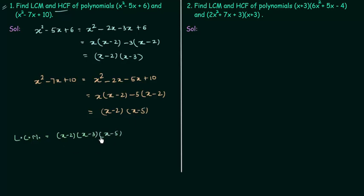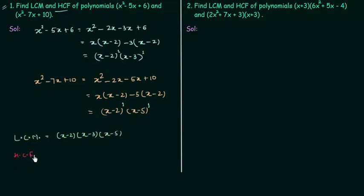We have to multiply these factors. The highest index for (x - 2) is 1 in both polynomials, so we take (x - 2). There is only one (x - 3) with index 1, so we include (x - 3). Similarly, (x - 5) has index 1, so we include (x - 5). Therefore the LCM is (x - 2)(x - 3)(x - 5).